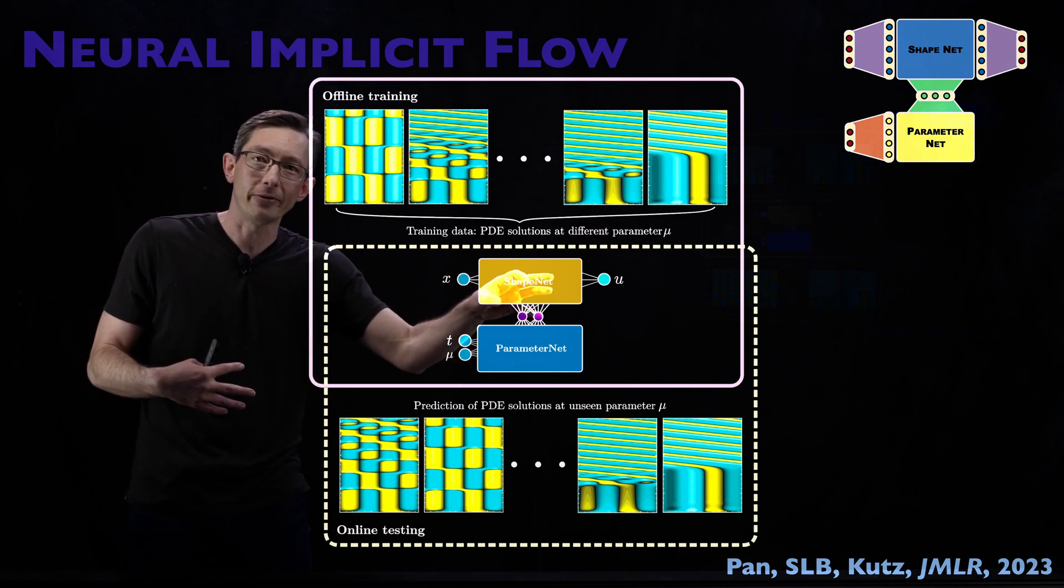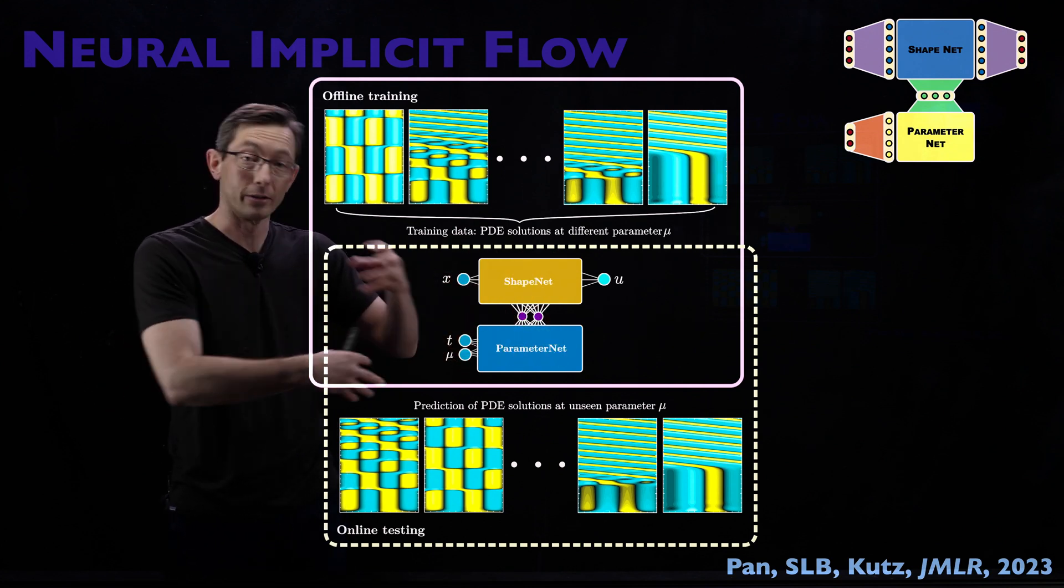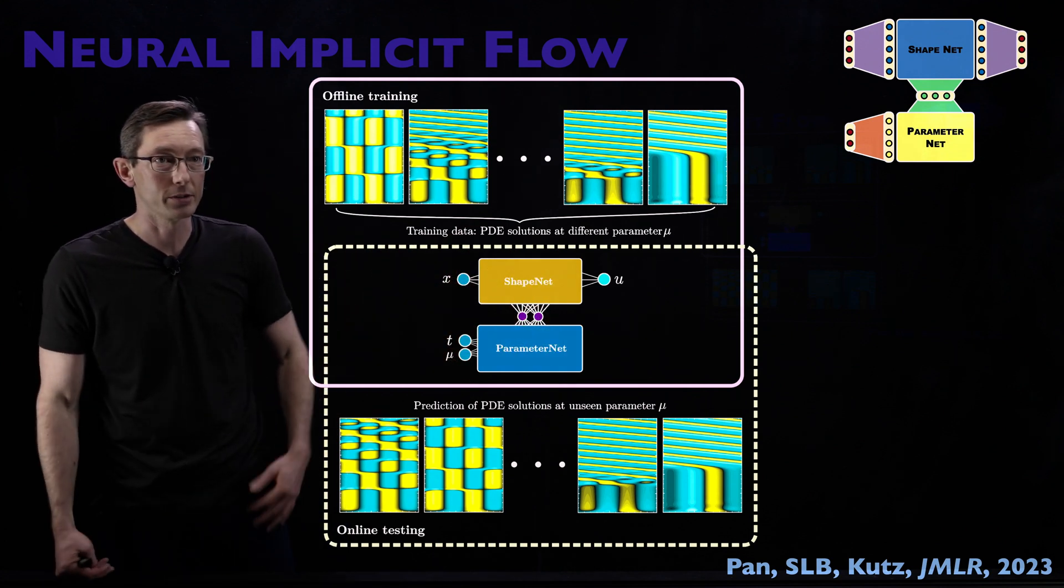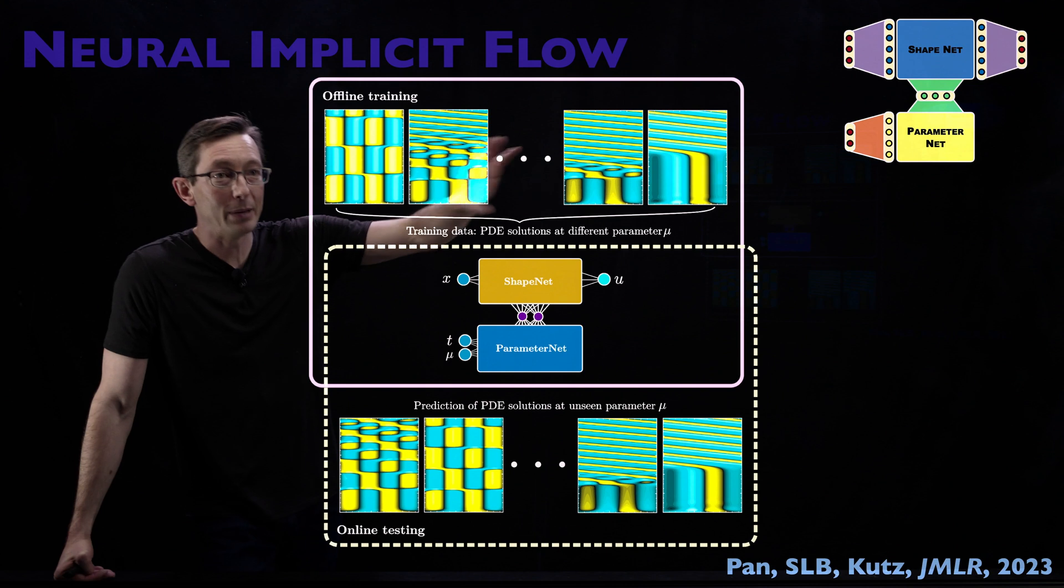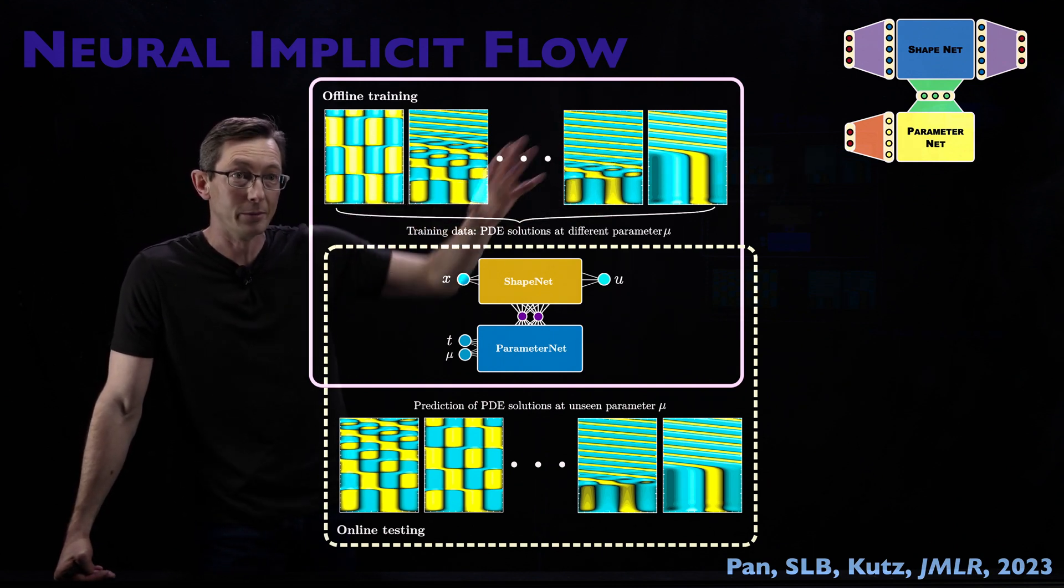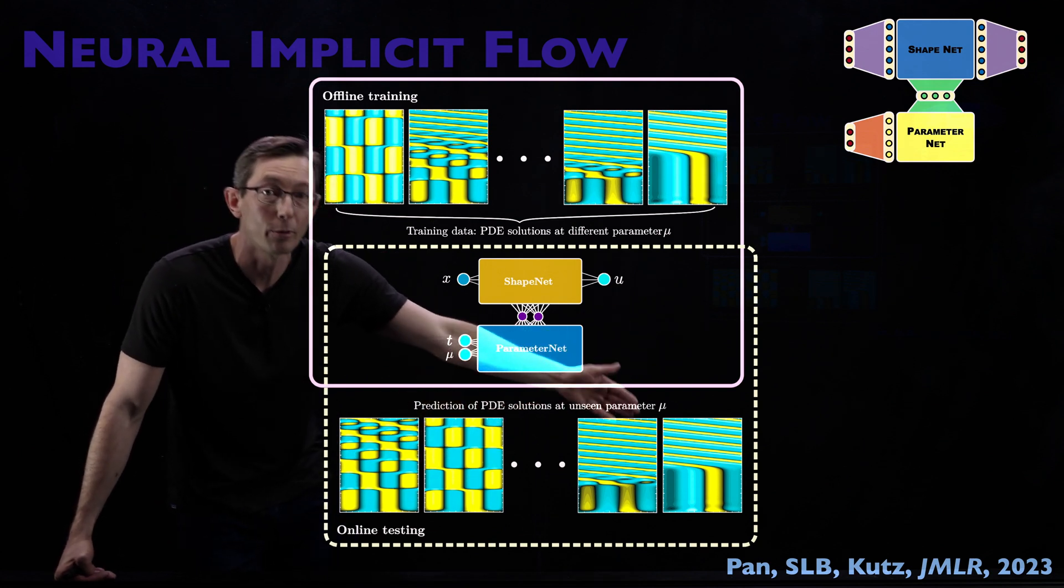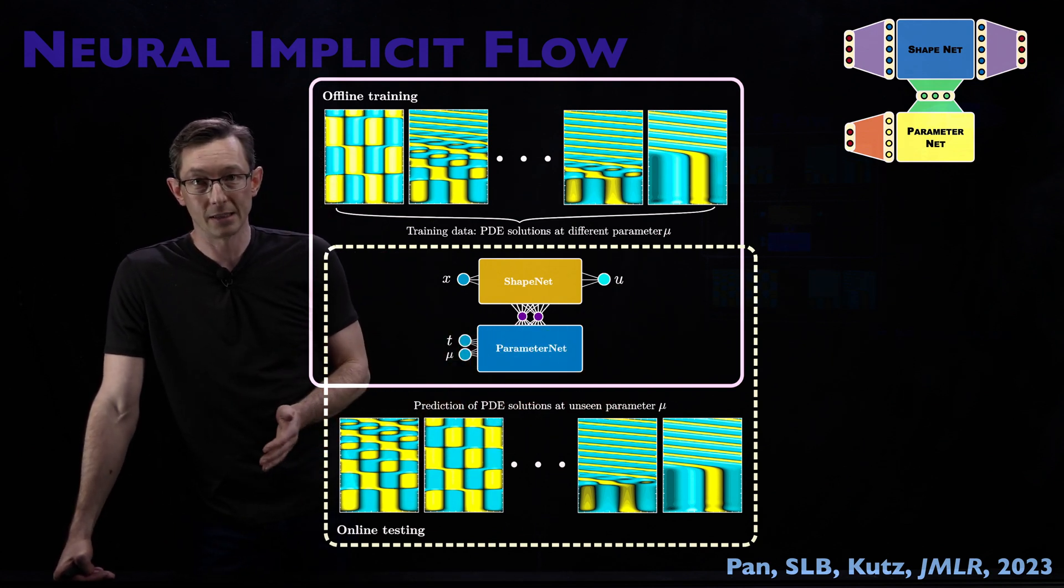And these shape functions can change with time or as I vary that parameter for different Mach numbers or Reynolds numbers. So you train with PDE solutions at different parameter values, and as they evolve in time, you train these networks, and then you can predict your PDE solution at different new parameters mu and new times t.